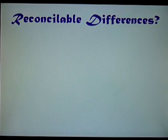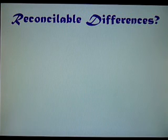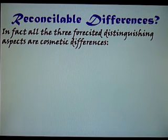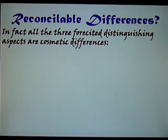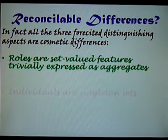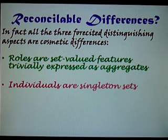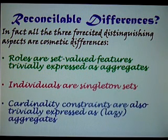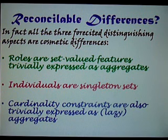But are these differences real differences? Can they be reconciled? In fact, the three that we just cited are cosmetic differences. Roles are just set-valued features, essentially functions that return aggregates. Individuals are also singleton sets. And cardinality constraints can be expressed as lazy aggregates.